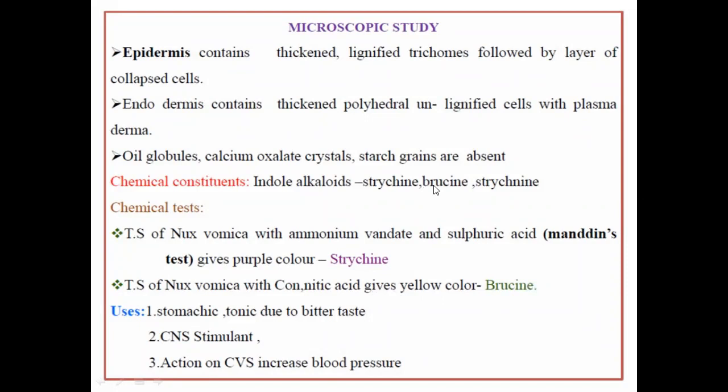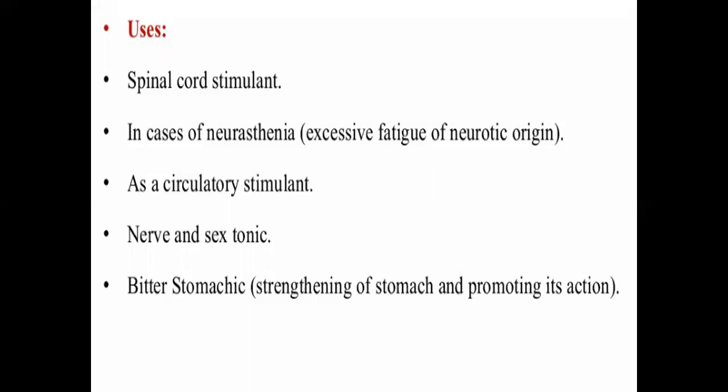These are the chemical constituents you need to remember. Its uses include: stomachic tonic due to bitter taste, CNS stimulant, and action on the cardiovascular system — it increases blood pressure. Other uses: it is a spinal cord stimulant in cases of neurasthenia, such as excessive fatigue of neurotic origin, as a circulatory stimulant, and as a nerve tonic and bitter stomachic, strengthening the stomach and promoting its action.